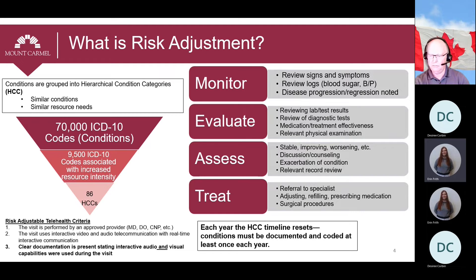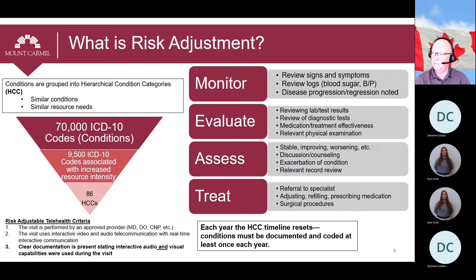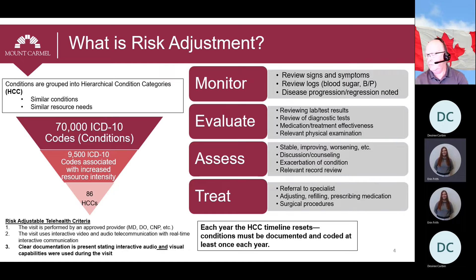Risk adjustment is the methodology by which CMS determines how to adequately allocate resources to Medicare Advantage plans for patient care. Both demographic and clinical factors determine resource allocation. Demographic examples include patient age, gender, institutional status, and Medicaid status. The largest clinical factors include chronic conditions that have been shown in CMS data to require more resources. There are 70,000 diagnosis codes included in ICD-10-CM, and each year, each diagnosis code is evaluated using CMS data to determine which codes utilize the most resources.